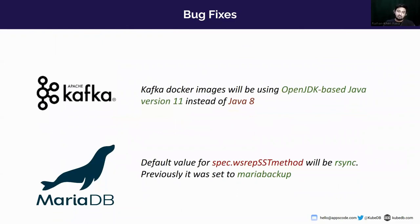We have done some improvements in Kafka and MariaDB support. For Kafka, Docker images will now use OpenJDK-based Java version 11 instead of Java version 8, as Kafka recommends this for better compatibility with the latest systems and security. Java 8 has been around for a while and has limited maintainability going forward. For MariaDB, the default value for spec.wsrep_snapshot_transfer_method will now be rsync, whereas previously it was set to mariabackup. You can reconfigure it back to mariabackup in the MariaDB spec section if needed.